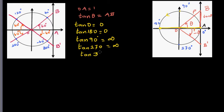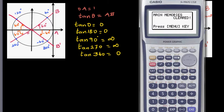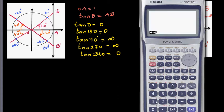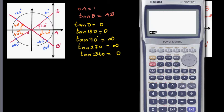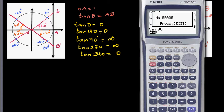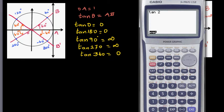Let me show these on the calculator. First, go to the run menu and check your settings — mine defaults to radians, so I'll change to degrees. tan(0) = 0, tan(180°) = 0, tan(360°) = 0, and tan(90°) is undefined. That's why when you draw a tan graph, you have asymptotes at 90° and 270°.